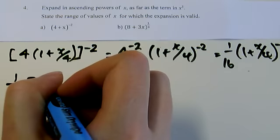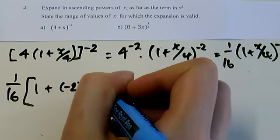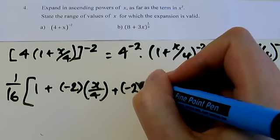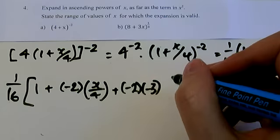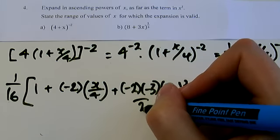so we've got 1 plus n times x plus n times n minus 1 multiplied by x squared over 2 factorial.